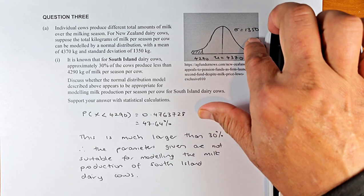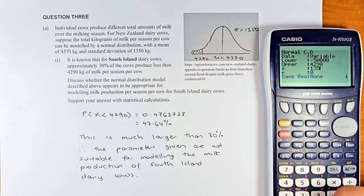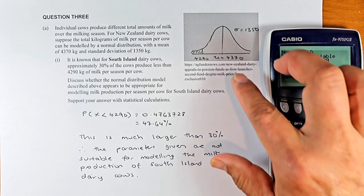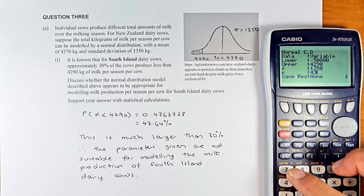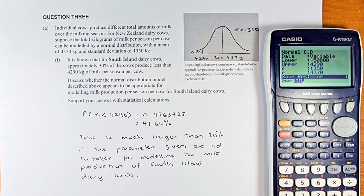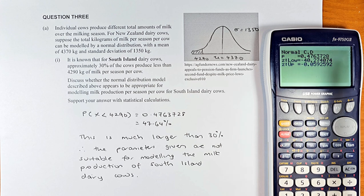Sigma, the standard deviation is 1350 and of course the mean is 4370. Execute them and you don't forget to execute one more time. And the answer is going to be 0.4763728.